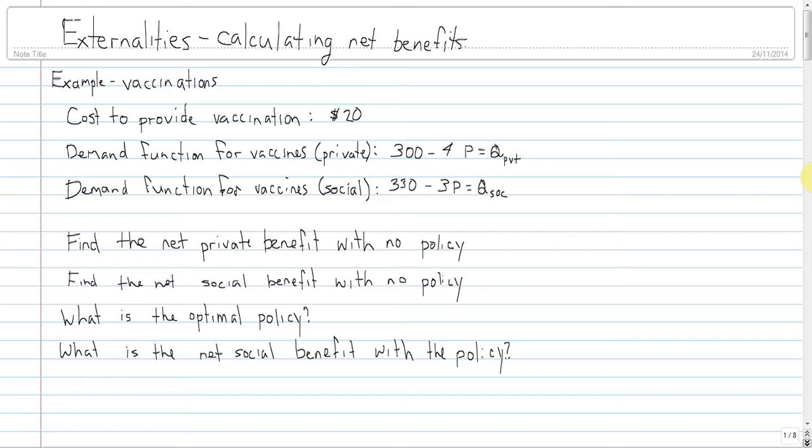I'm going to do the entire thing. An externality happens whenever social costs and private benefits are different from social benefits and private costs. If the private cost differs from the social cost, or if the private benefit differs from the social benefit, or some combination, then you've got yourself an externality, depending on the direction.